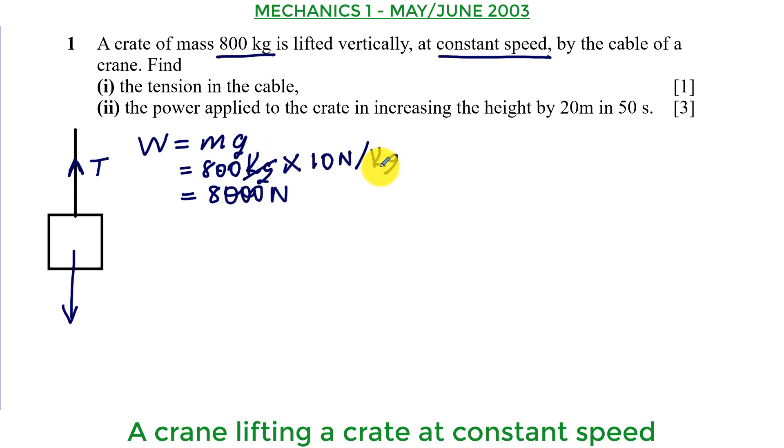And that gives us the weight of the crate to be 8000 newtons. Because of course the kilogram and the kilogram will cancel out giving us the weight to be 8000 newtons. That is the weight. Now this crate is moving upwards at a constant speed. And because the speed is constant, the acceleration will be zero.